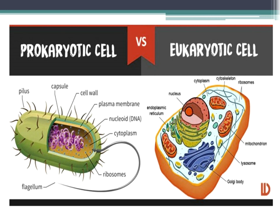Definitely with eukaryotic having a nucleus — be careful with the prokaryotic and the cell wall because eukaryotic cells can also have a cell wall. So the nucleus is a big difference. Prokaryotic cells don't have complex structures. Prokaryotic cells do not have a nucleus. One can have a flagellum.